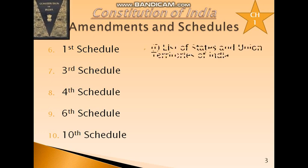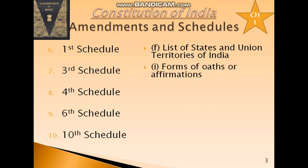The 1st Schedule lists the states and union territories of India. The 3rd Schedule explains the forms of oath and affirmation.